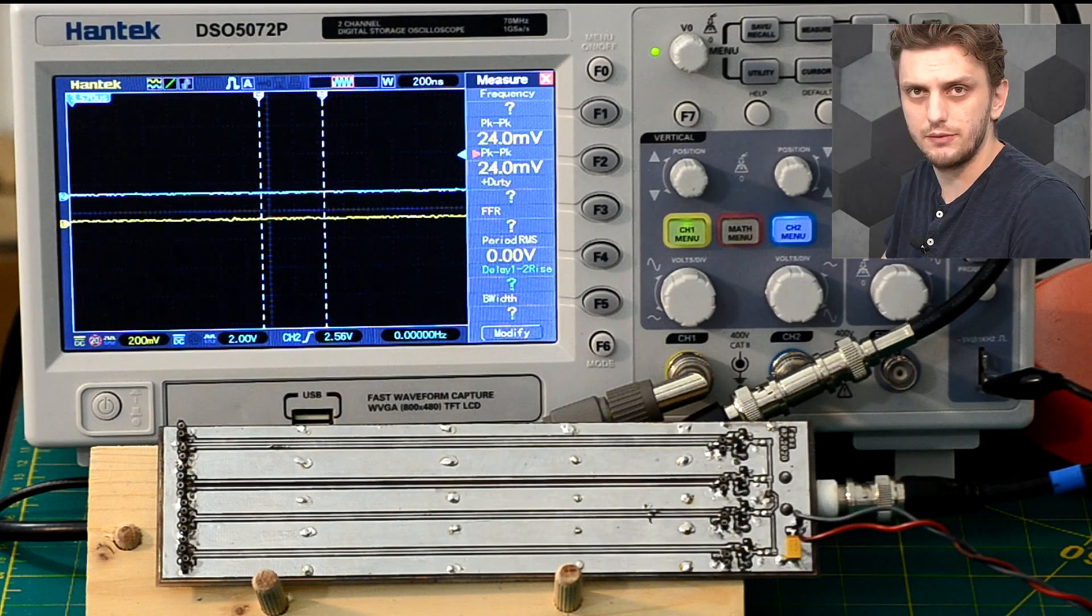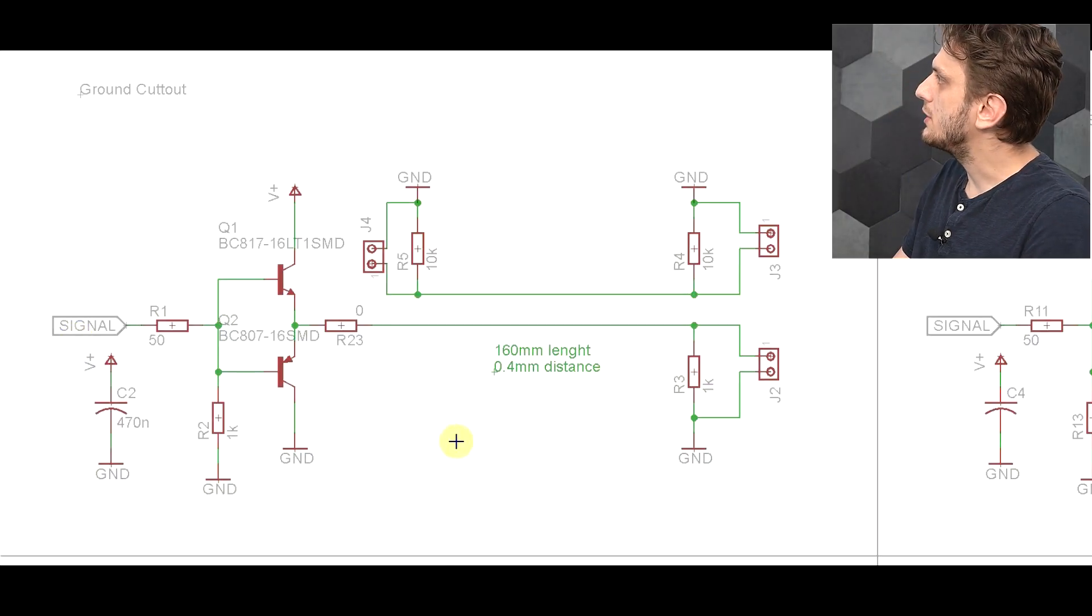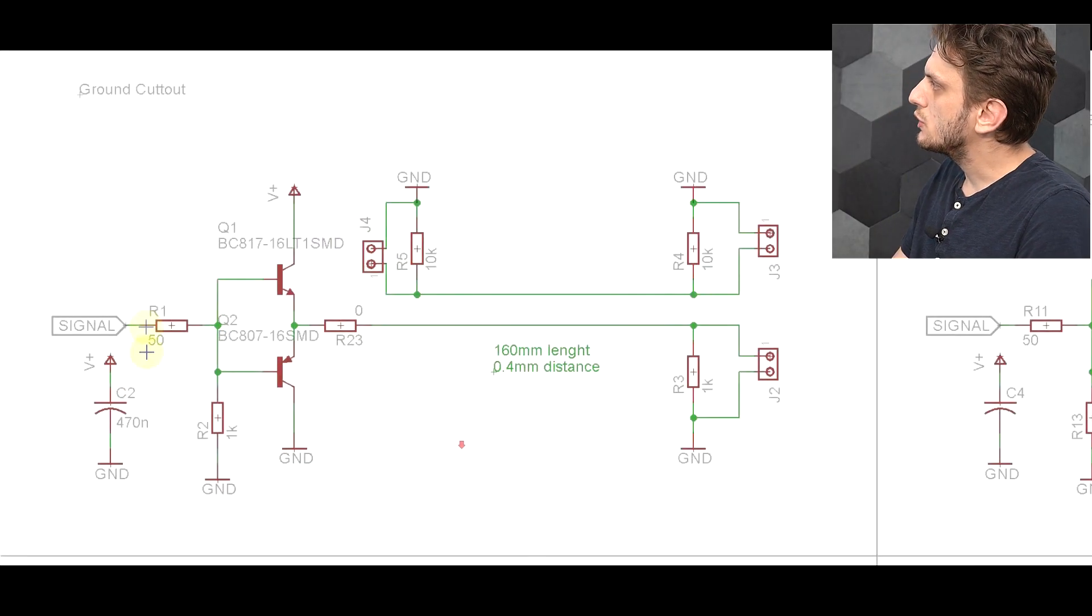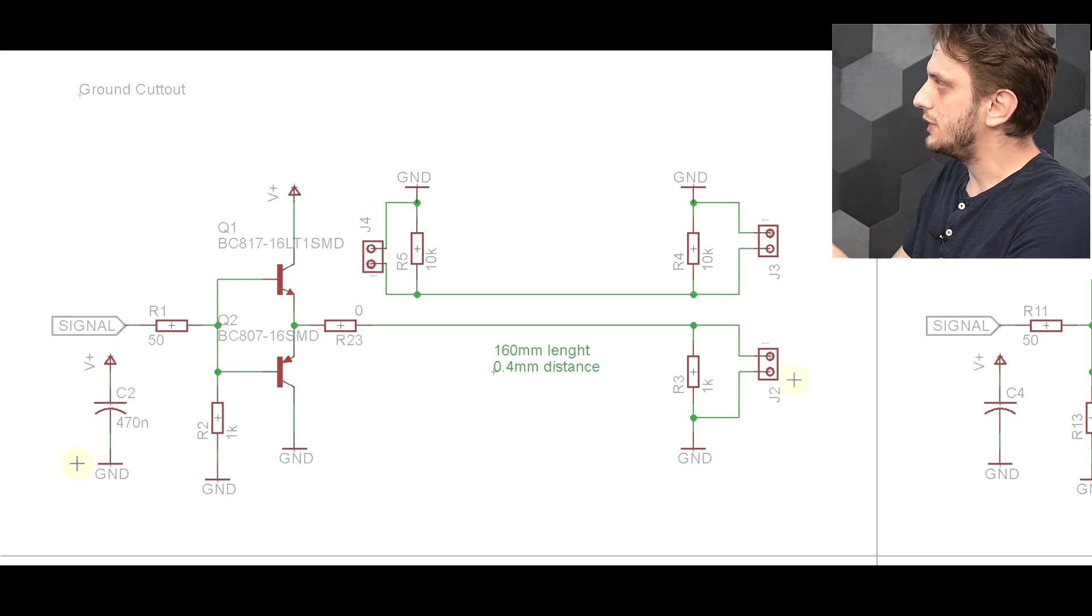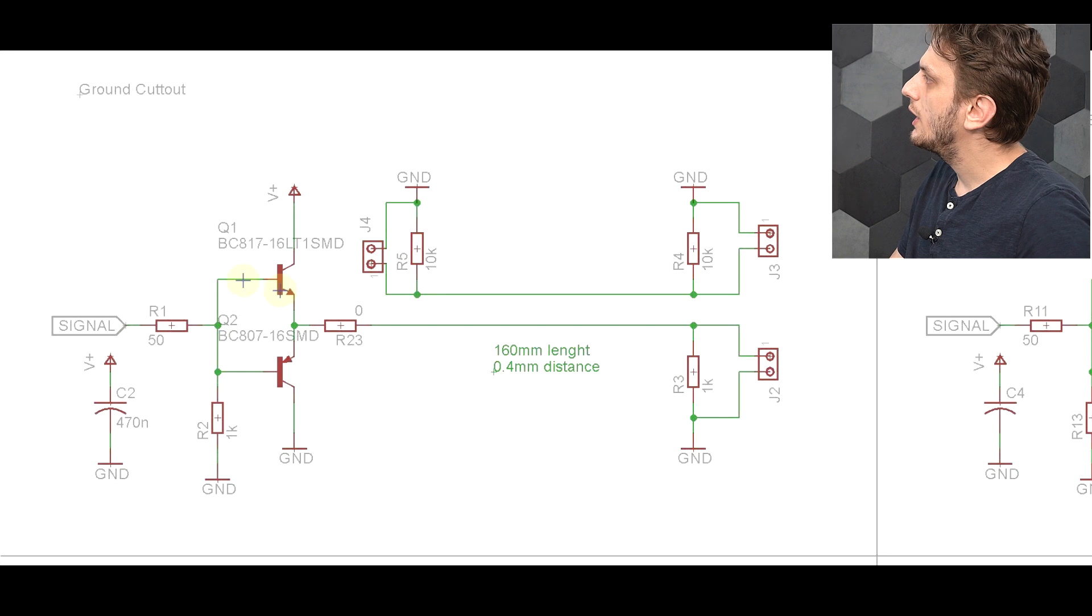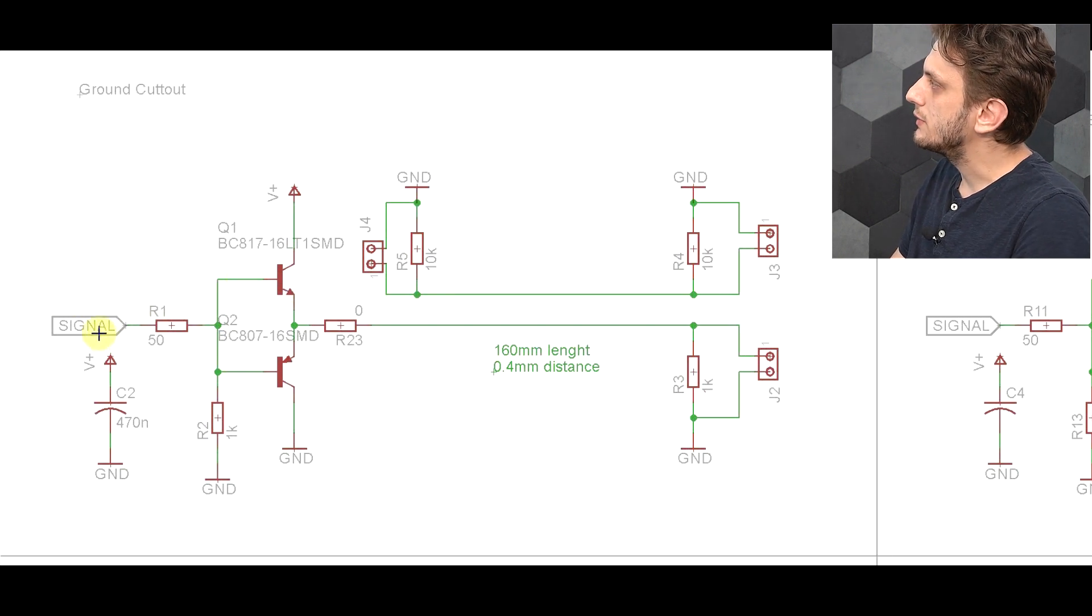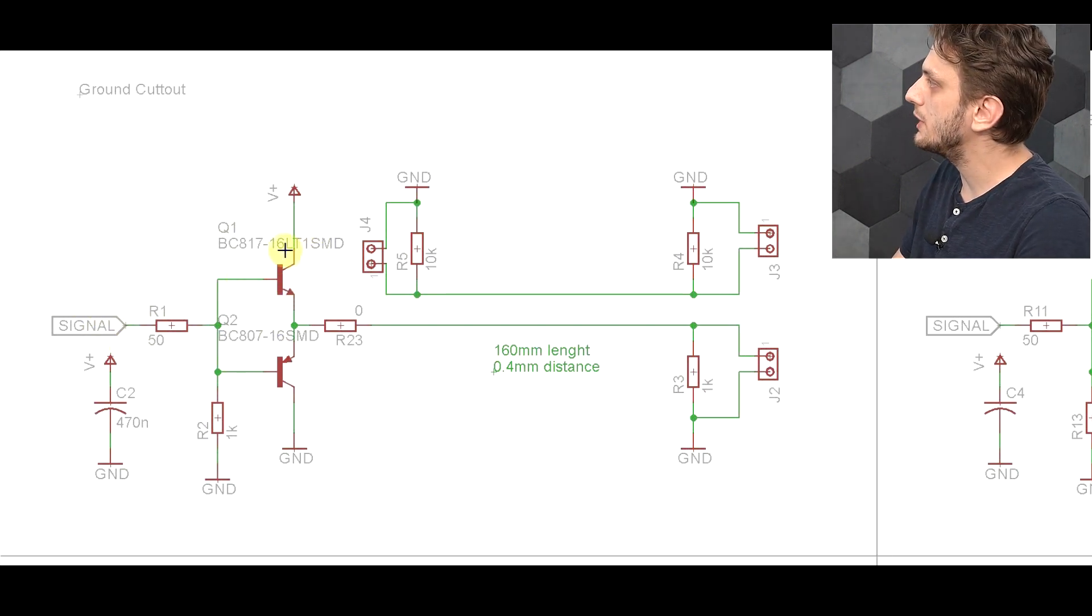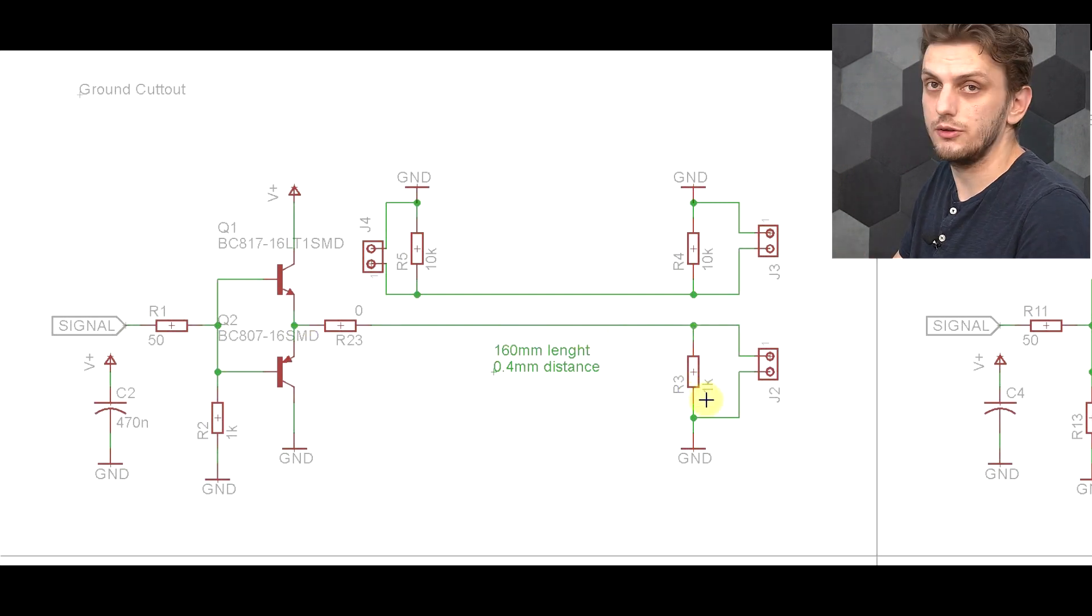Now the exact schematic of this thing, we can see right here. So basically, I have four of these stages built, so we have four experiments going on. And basically, I got my signal from the signal generator coupling into this push-pull driver, and this is connected to a long line terminated with a one kilo-ohm resistor.